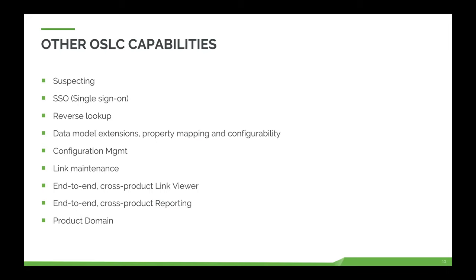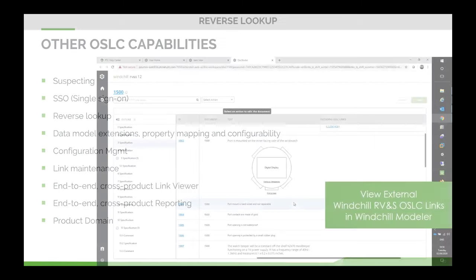Configuration management is a big topic and we're starting to address some configuration use cases, continuing to push things forward. Link maintenance is really important — when OSLC links need to change, there needs to be a way for users to manage and maintain them ideally in bulk. We're working on a viewer to show end-to-end cross-product links with prototypes that dynamically run queries to retrieve information live. Similarly for reporting — it must be end-to-end and cross-product.